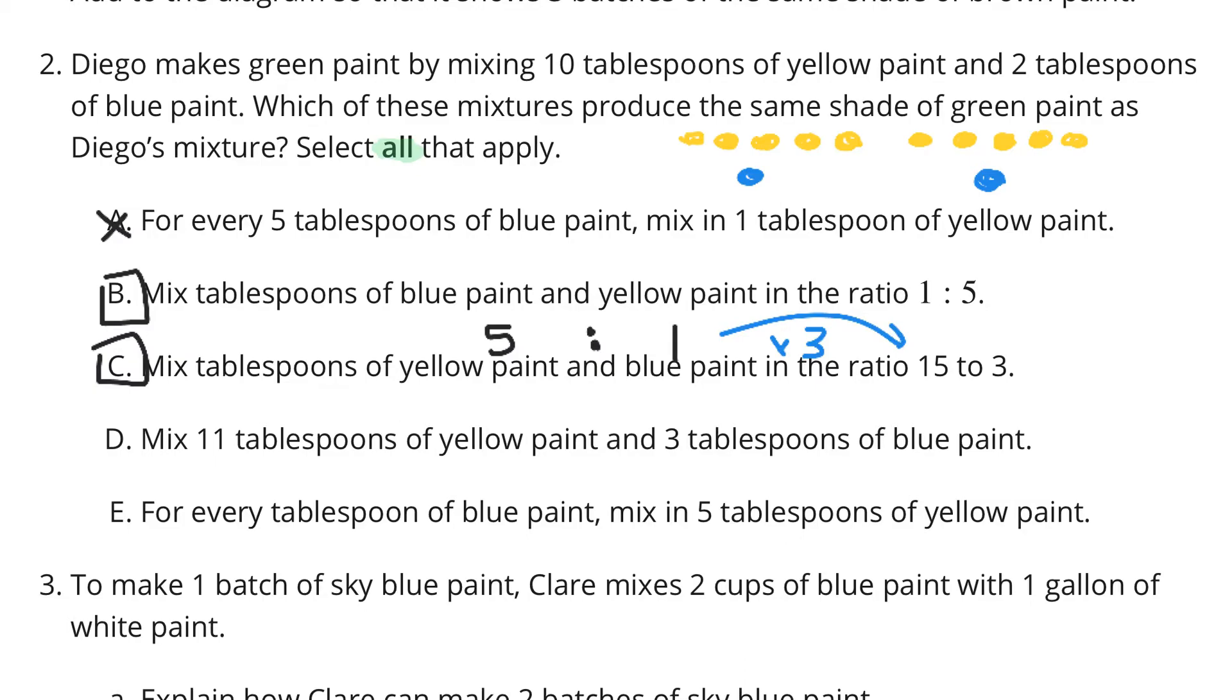D. Mix 11 tablespoons of yellow paint and three tablespoons of blue paint. Basically, all they did was added a yellow and a blue and claim that that's the same kind of mixture. Well, no. That throws everything off. You can't just add it one to one back in. So, D is not a possible solution here.